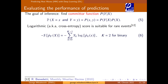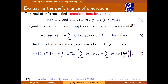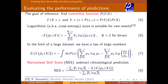In the limit of large datasets, this can be expressed in terms of Shannon entropy and Kullback-Leibler divergence — you're trying to approximate the true probability with the neural network's output. The normalized skill score we report compares the logarithmic score against a simple climatological prediction — e.g., a five percent prior probability of a heat wave. A score of one means perfect prediction, zero means as good as climatology, and negative means worse.